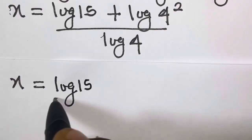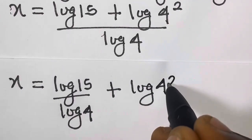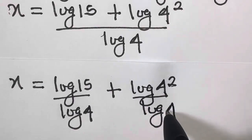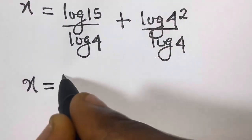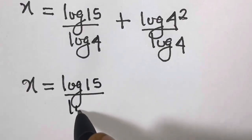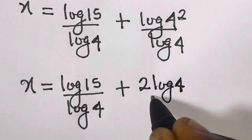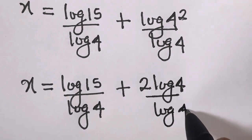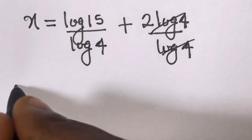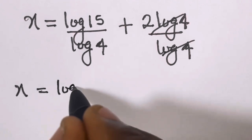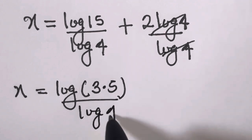So we have x equals log 15 divided by log 4, plus log 4 raised to the power 2 divided by log 4. For the second term, log 4 squared divided by log 4: we can cancel log 4, leaving 2. So we have x equals log 15 divided by log 4, plus 2.